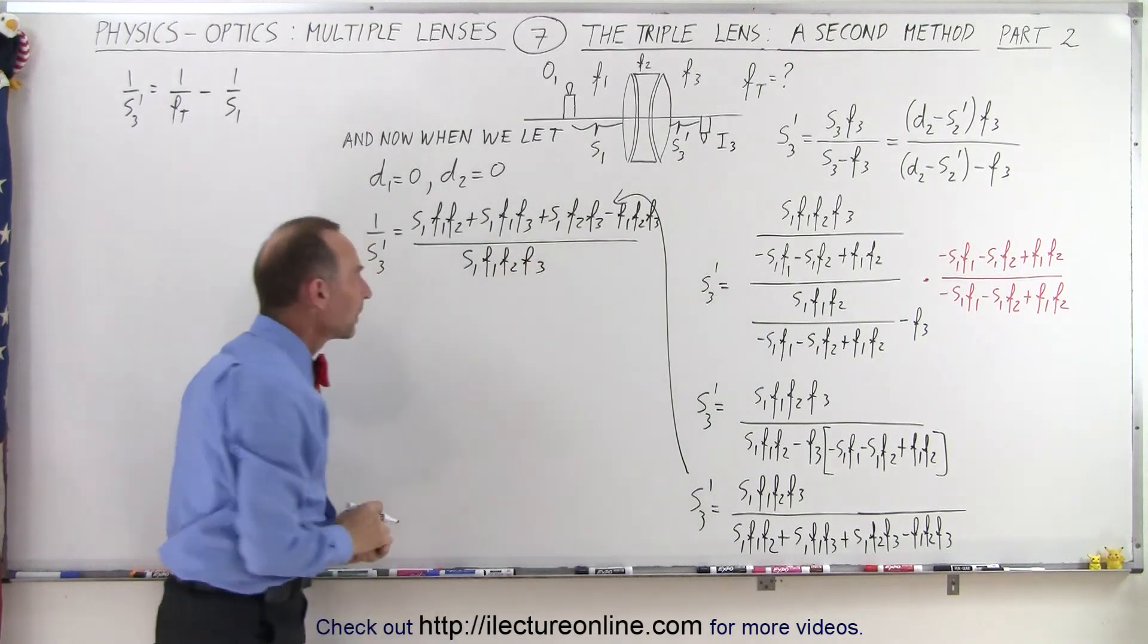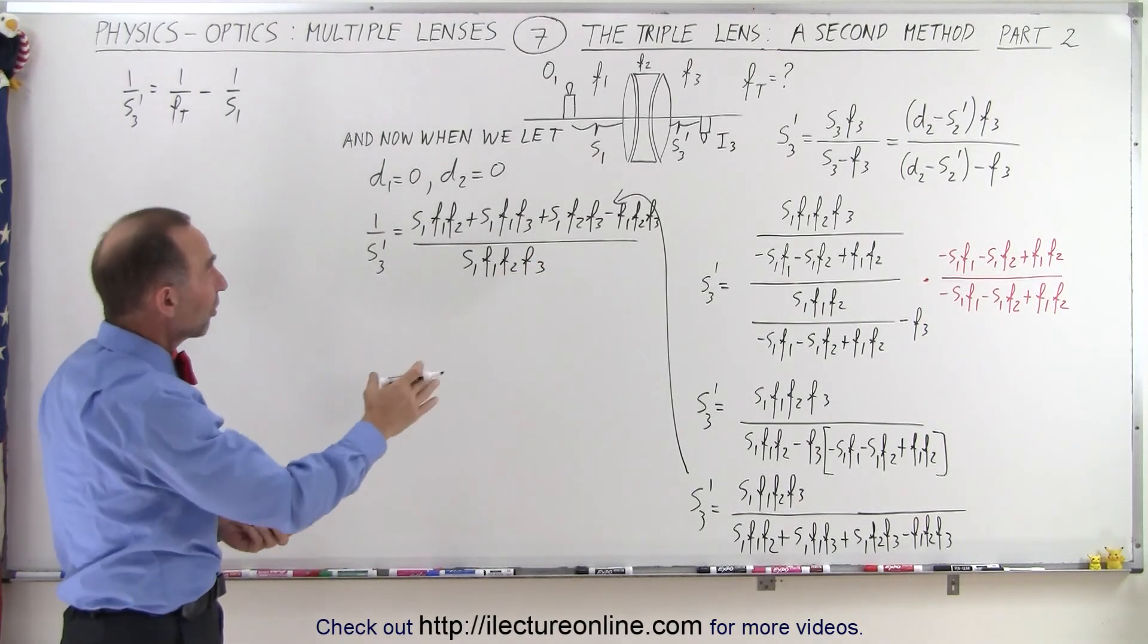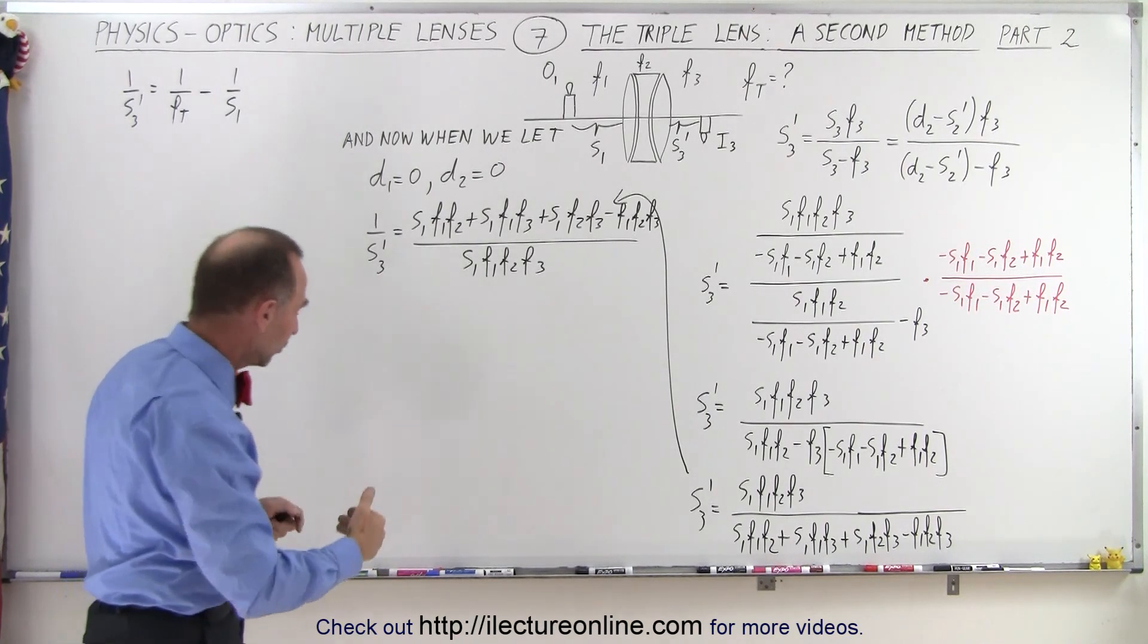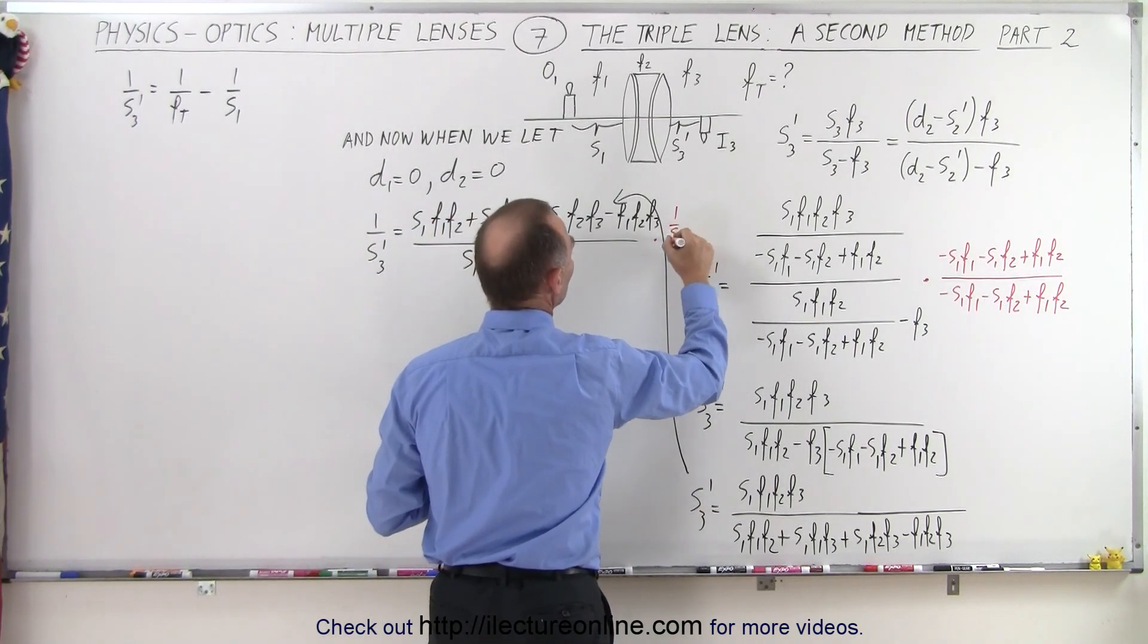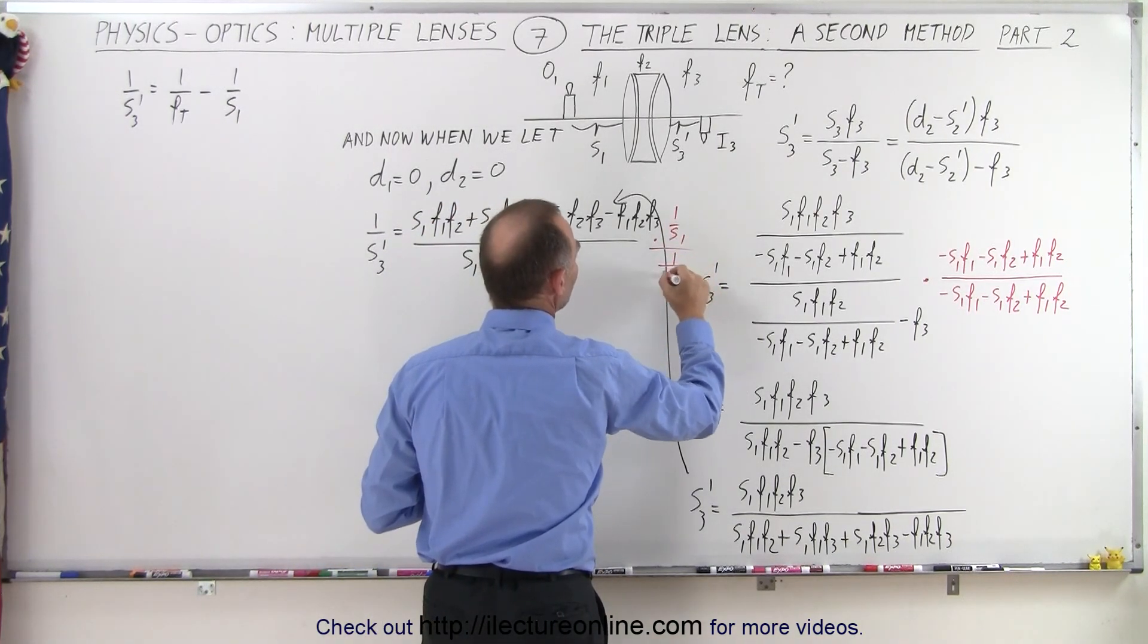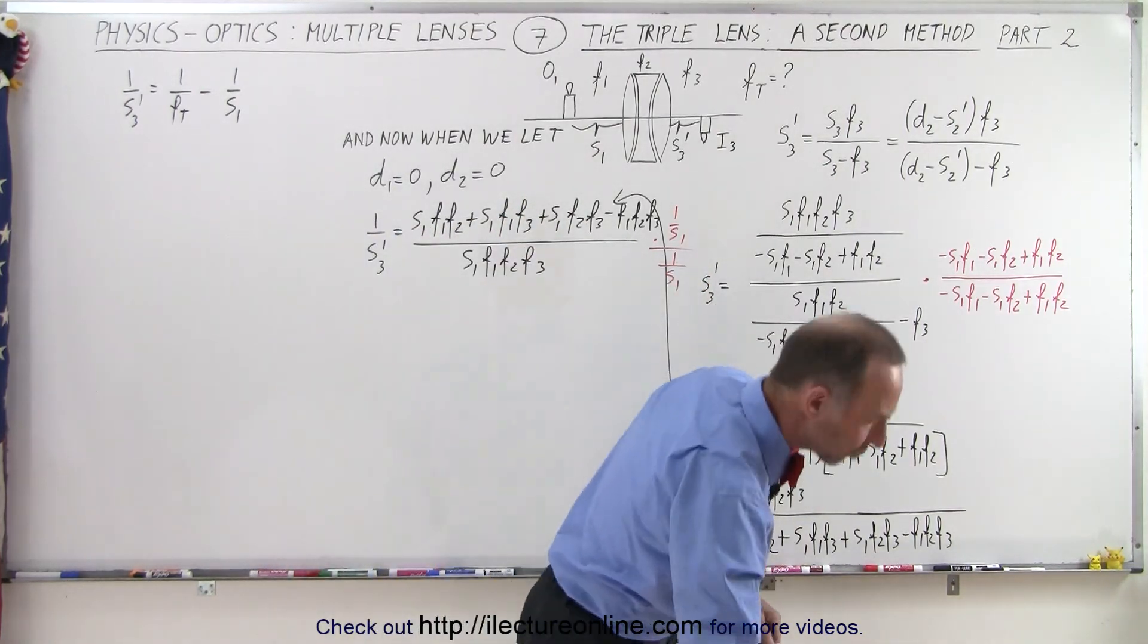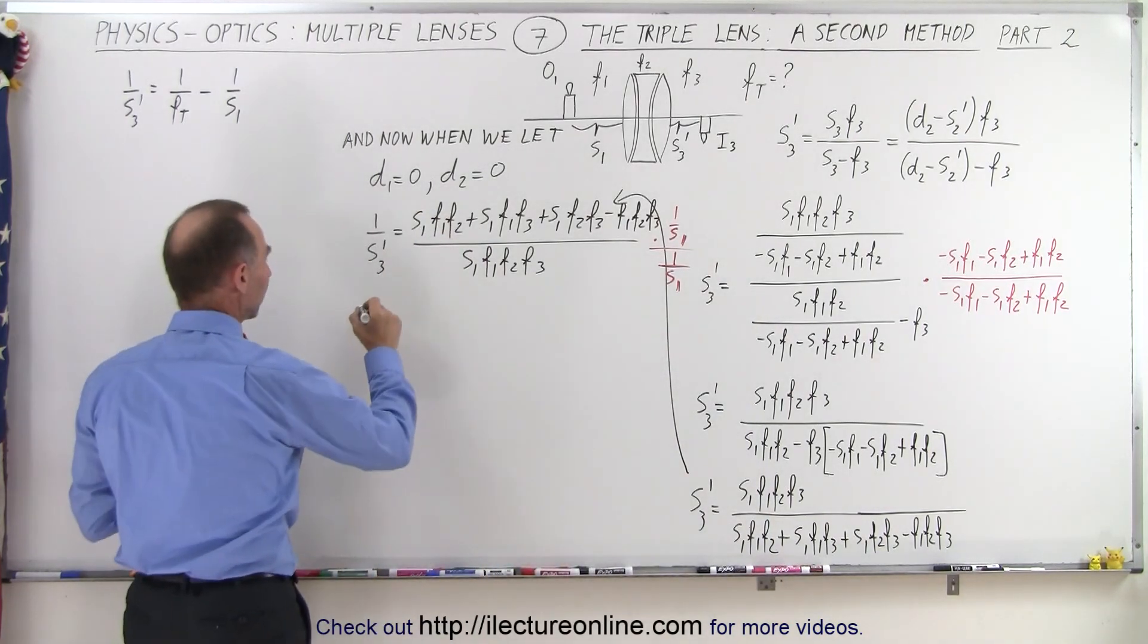Next I think what we should do is get rid of most of those s1s. We have a lot of s1s in there, so we're going to multiply or divide both the numerator and the denominator by 1 over s1. When we do that, this then simplifies a little bit further.